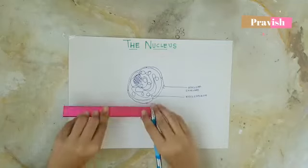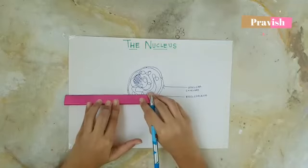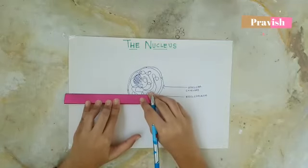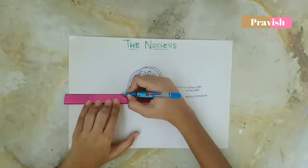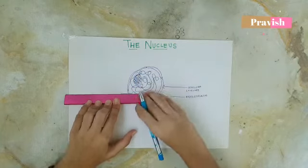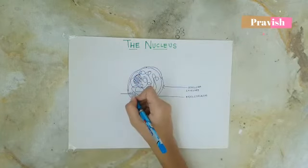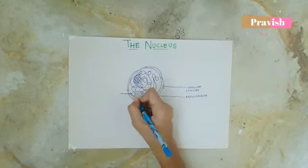The thread-like structure that contains the genetic information about the nucleus is known as chromatin.